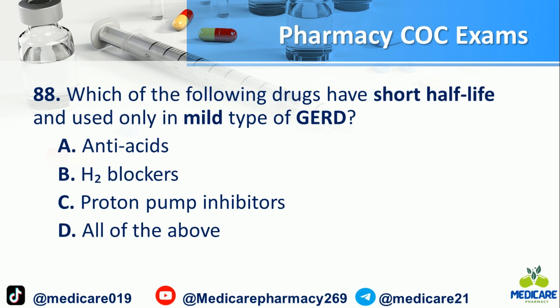Number 88: Which of the following drugs have a short half-life and are used only in mild type of GERD? a. Antacids. b. H2 blockers. c. Proton pump inhibitors. d. All of the above. The answer is A.